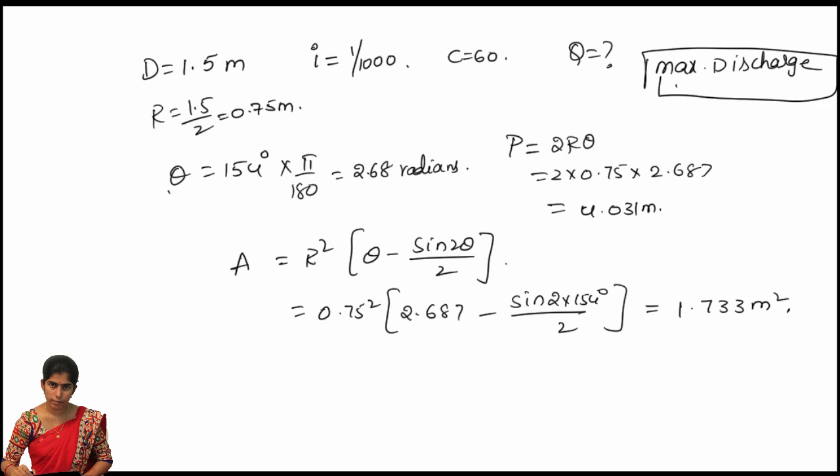Next, finding out the discharge, the formula is Q is equal to AC root MI. We have area value and we have C value, we have I value. Next we have to find out M value, where M is equal to A by P, where A we got the value of 1.733 by perimeter we got the value of 4.031. By solving this, the value of M is 0.4299.